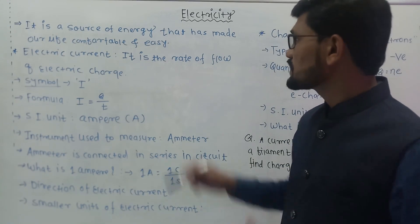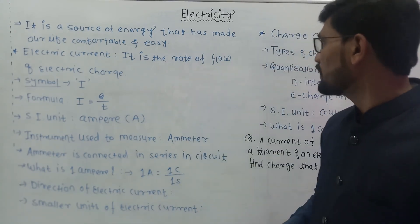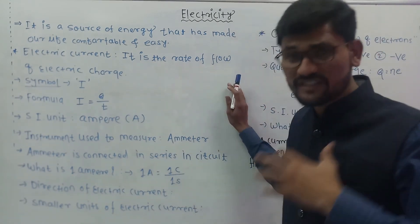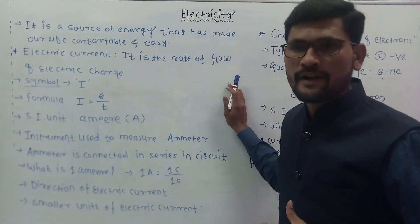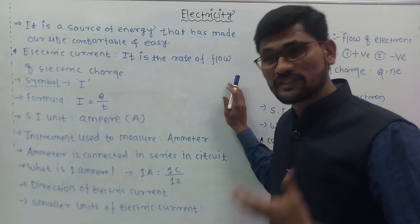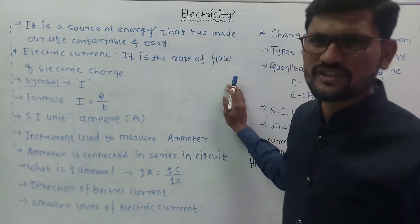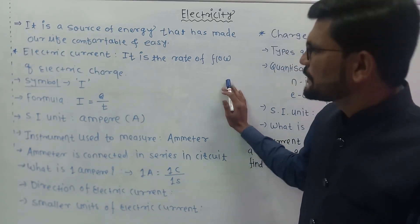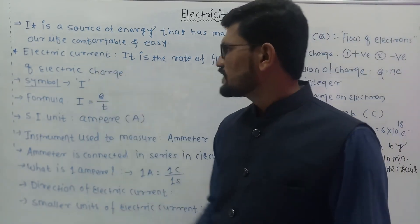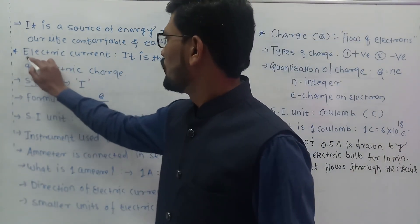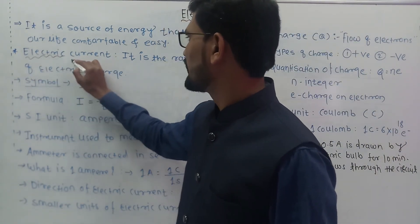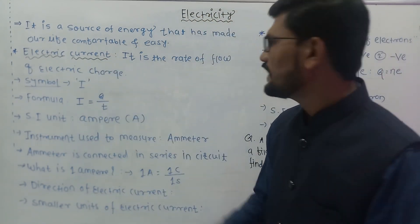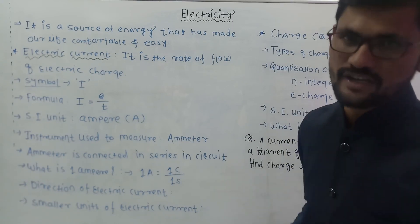Today in this session we are going to understand the physics topic of electricity. We will understand the basic portion: what electricity is, what the components are, what an electric circuit is — all these things we will try to understand. First of all, we will try to understand electric current. Electric current is nothing but the rate of flow of electric charge.